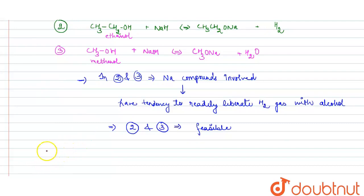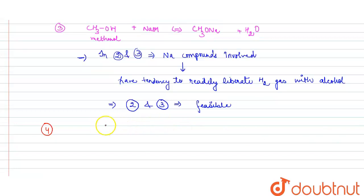That is reaction 4. If I write the reaction, here we have HC triple bond CH reacting with NaOH. And on the product side we have CH triple bond CNa plus H2O. So now in this case, if we check carefully, this one is a weak acid.